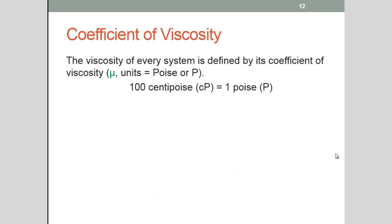The viscosity of every system is defined by its coefficient of viscosity. We use the units poise or a capital P when describing coefficient of viscosity. Since many of the liquids that we use in pharmacy practice have really quite relatively low viscosity they're often described using the unit centipoise or CP which is a hundredth of a poise. Now let's look at the viscosity of some common liquids that we see in health.